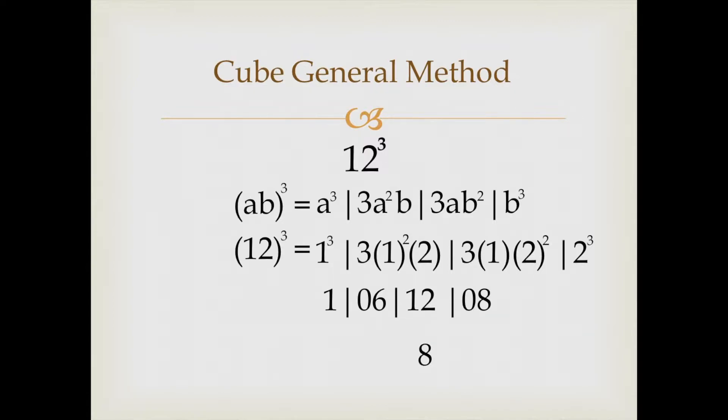Now 0 would be carried over to the next digit. 0 plus 2 is 2, write 2. Move forward. 1 plus 6 makes 7, write 7. 0 plus 1 makes 1, write 1. So 12³ is 1728.